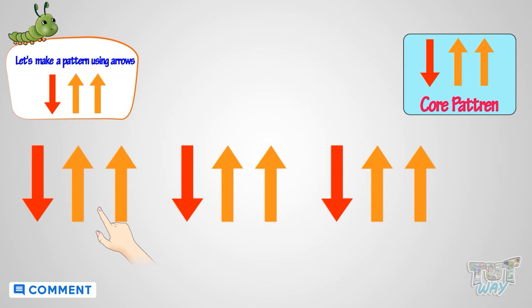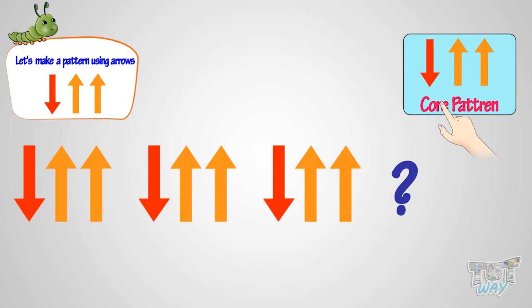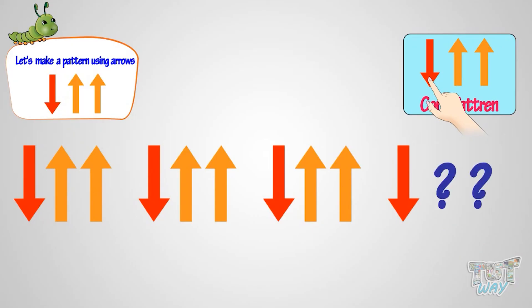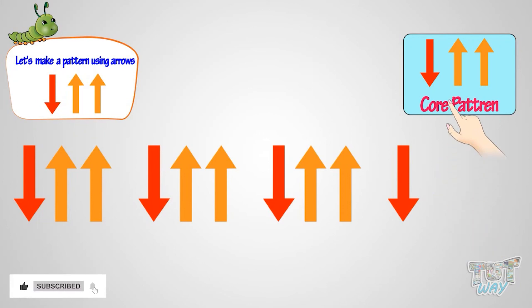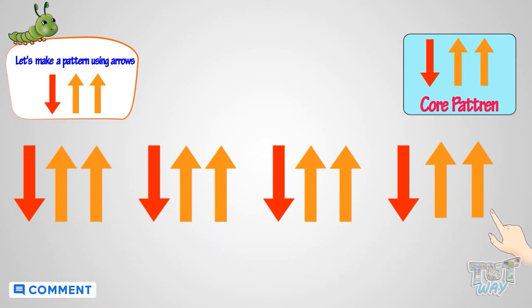Now let's repeat this core pattern to make a bigger pattern. Which shape comes next? We have to repeat the core pattern — so first the first shape of the core pattern: one arrow downwards. Can you tell me what comes next? According to the core pattern, two more arrows upward will come. It's complete now!